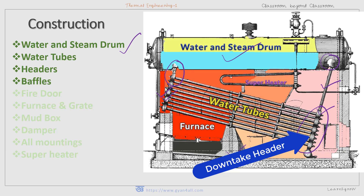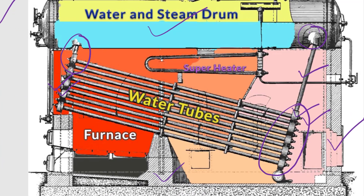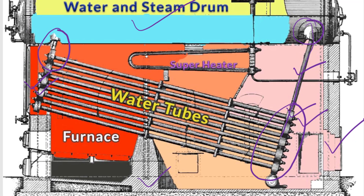The downtake header is placed at the chimney end of the boiler. This header joins the water tubes to the bottom of the drum. It collects water from the drum and flows it towards the other end through the water tubes. The water comes down through this downtake header and flows toward the water tubes.